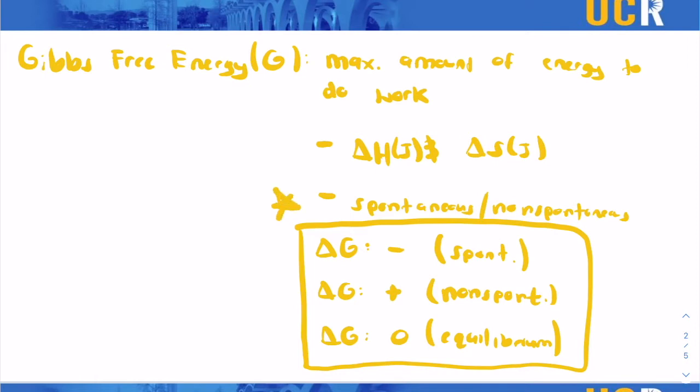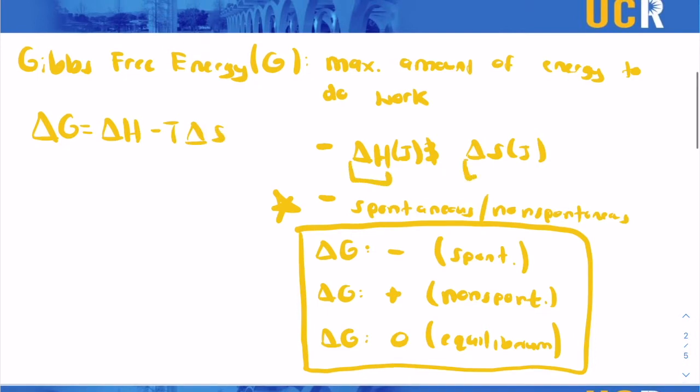And then the actual equation is delta G equals delta H minus T delta S. So you see how from earlier I said that it takes into account delta H and delta S. They're right here. So it takes both of these values and combines them to give a better value that tells us more information about the reaction.